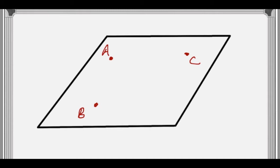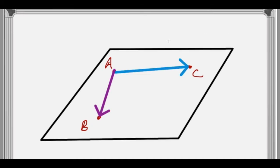What you want to do is make two vectors. I'm going to make the vector AC and the vector AB, starting at A, terminating at B, and starting at A and terminating at C.